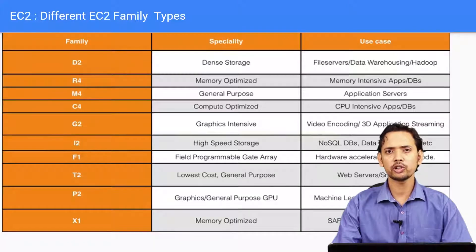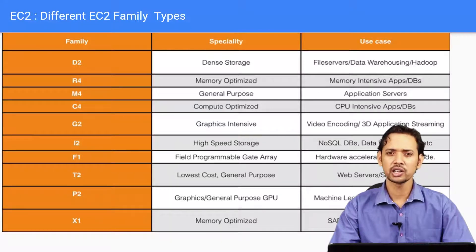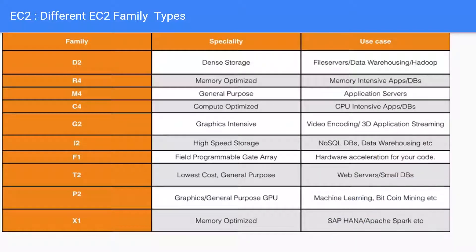Hello folks, in this video we will talk about size of EC2 instances. We refer to them as instance type. In AWS you will find various families, for example general purpose like T2, M4, compute optimized like C4, memory optimized like R4, GPUs like P series, memory optimized as X series. These families of instances are to group similar kind of instances and similar kind of use cases.